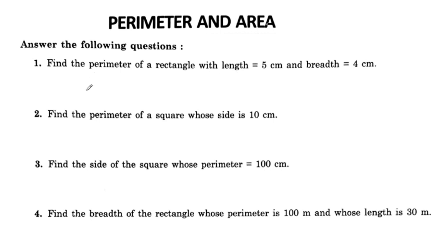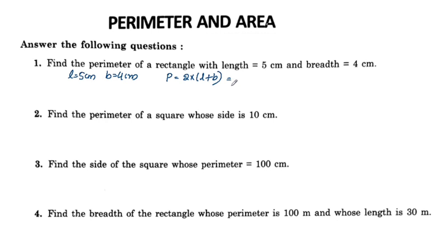First question: find the perimeter of a rectangle with length equal to 5cm and breadth equal to 4cm. The perimeter of a rectangle equals 2 into (L plus B). 5 plus 4 is 9, and 9 into 2 is 18. So the perimeter is equal to 18cm.